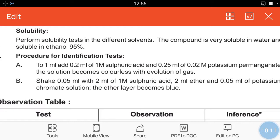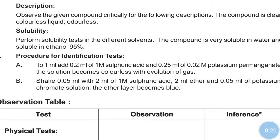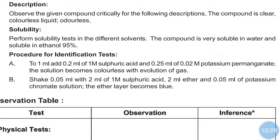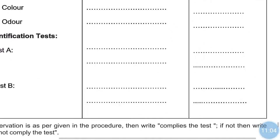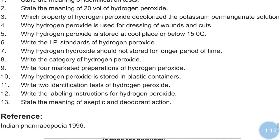For the first identification test: to 1 ml of sample add 0.2 ml of 1 molar sulfuric acid (H2SO4), then add 0.25 ml of KMnO4 — the solution becomes colorless with evolution of gas. For the second test: shake 0.05 ml with 2 ml of 1 molar sulfuric acid, add 2 ml ether and 0.05 ml potassium chromate solution — the ether layer becomes blue. Write the result accordingly.